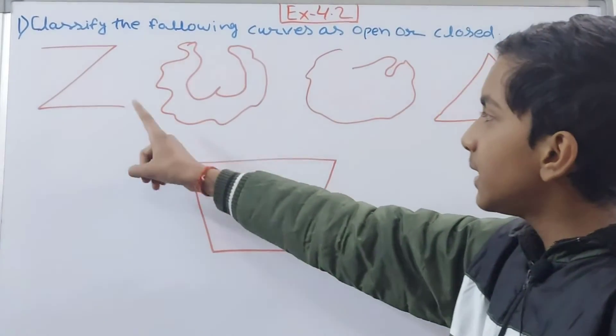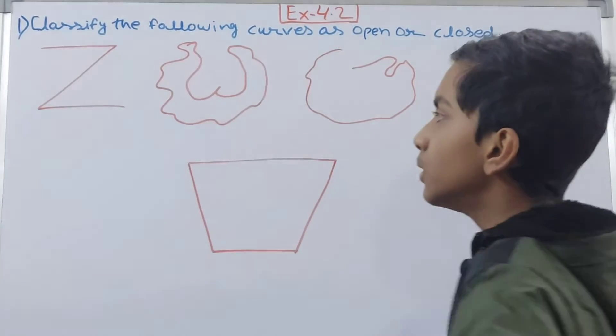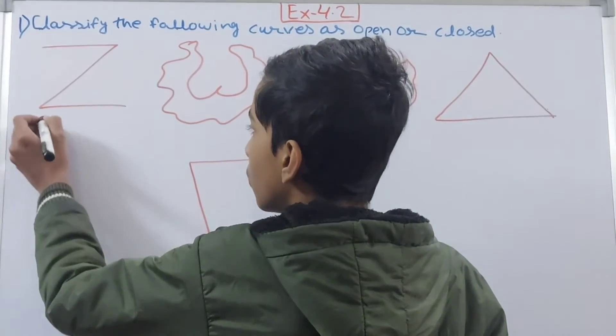Let us start. First is this. It is Z given to us here, and you can clearly see that the boundary is not closed. So this one is an open curve.